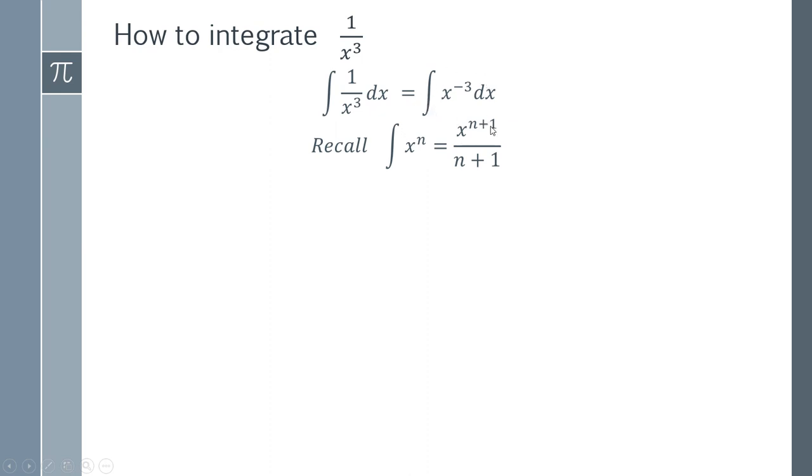And we can do that on our new expression here. So we add 1 to the power and then we divide by that new power. So we tidy this up, we've got minus 3 plus 1 and minus 3 plus 1, so that's of course minus 2.